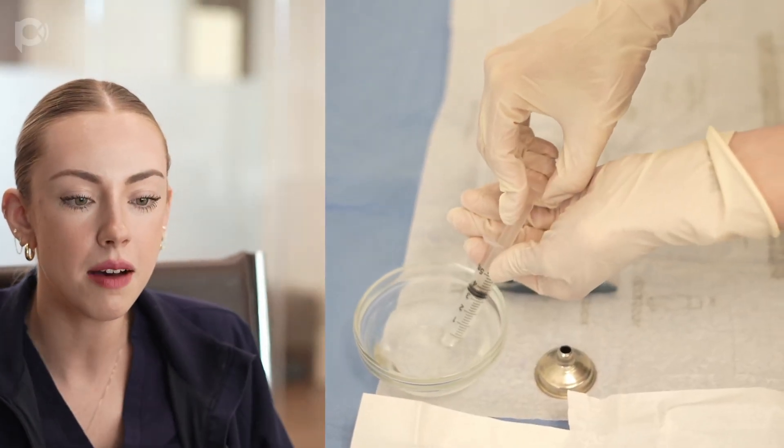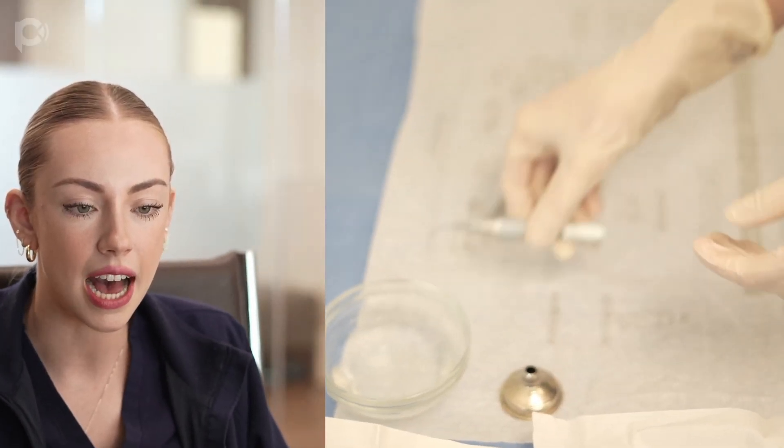So first I'm drawing up some BSS out of a little glass bowl. I draw up about 3 cc's into a 5 cc syringe.